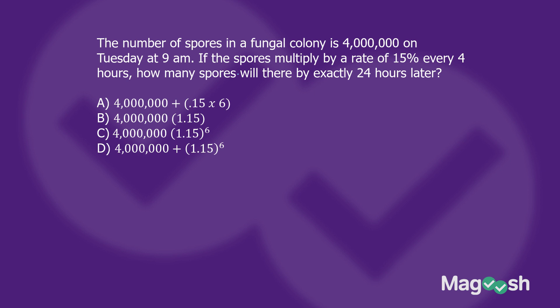Now, pause the video and see if you can quickly home in on the right answer. We have 4 million — that's the original number. We know it has to be multiplied by something per the formula. The two answer choices with plus signs aren't right. For the fixed intervals: take the total time of 24 hours and divide by the length of the interval, which is 4 hours, giving you 6. Look at B — there's no 6 there. It has to be answer choice C. By barely doing any math, but just understanding the concept and the formula, you can quickly get to the right answer.